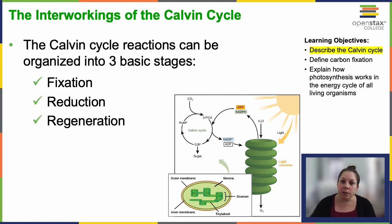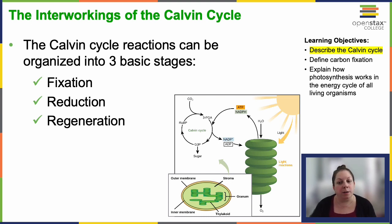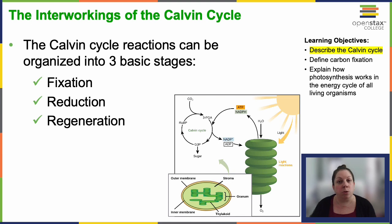The Calvin Cycle is named for Melvin Calvin, who discovered the process. In plants, carbon dioxide is taken in through the stomata, diffuses into the mesophyll cells, and enters the stroma of chloroplasts. This is where the Calvin Cycle occurs — in the stroma.